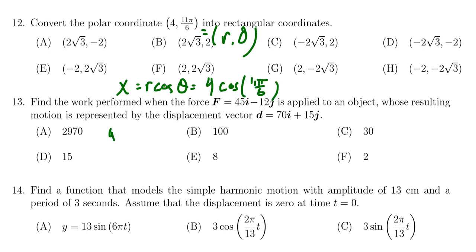Similar for the y coordinate, the y coordinate is going to be r sine θ, so we end up with 4 times sine of 11π sixths, which references π sixth but it's in the fourth quadrant.